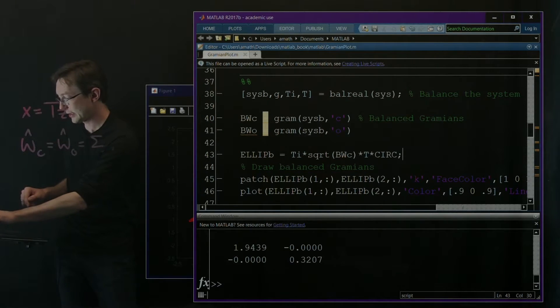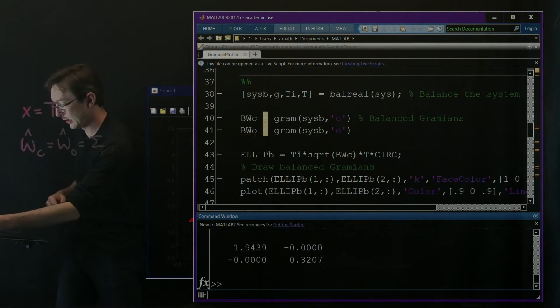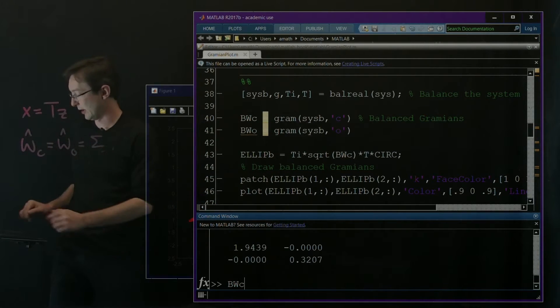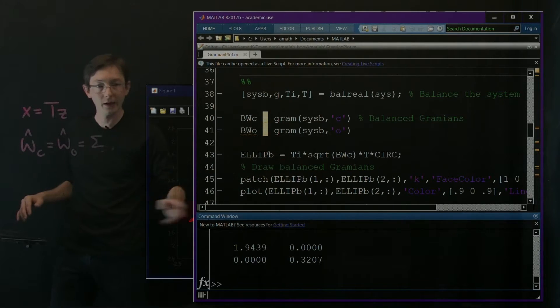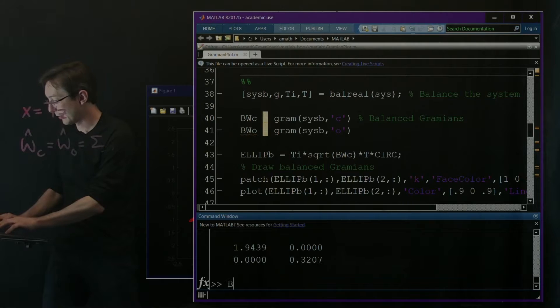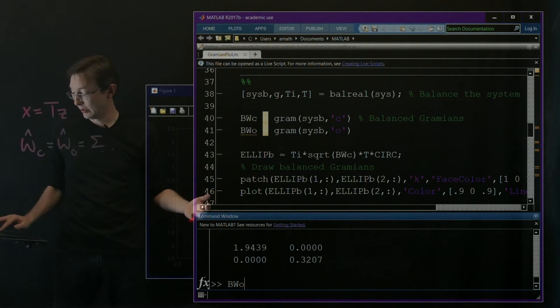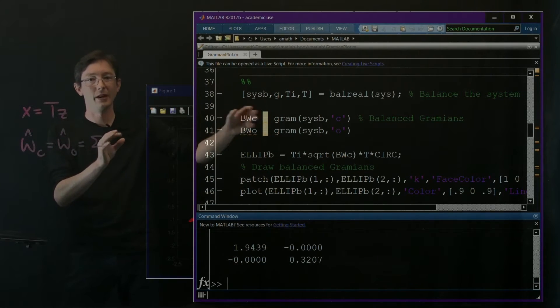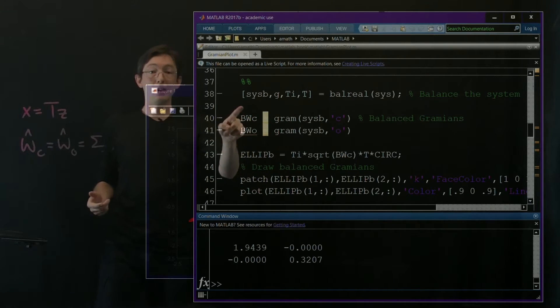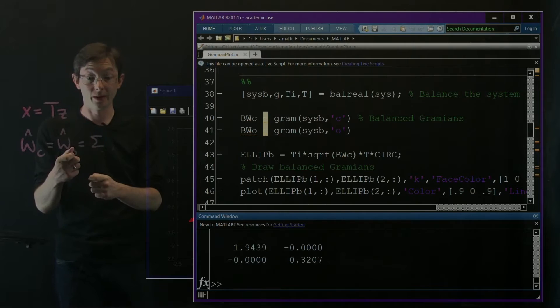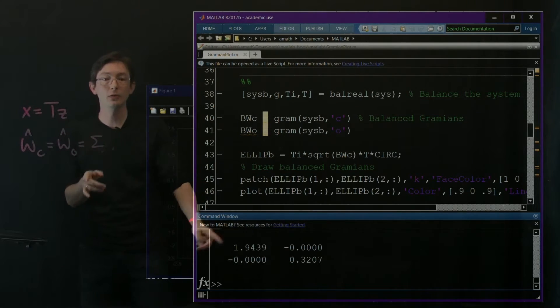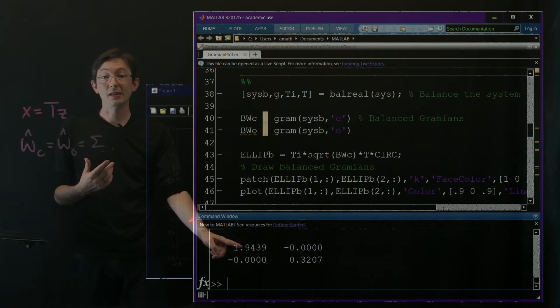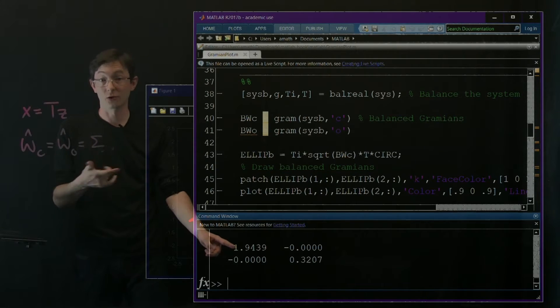And a couple things. First of all, in my command window, I plotted the controllability, the BWC. This is my balanced controllability Gramian. 1.9439 and 0.32. So it's diagonal. And now I'm going to plot my balanced observability Gramian. And it's the same. It's exactly the same. These little minuses popped up because those are zero plus or minus something really, really small. But basically, my balanced controllability and observability Gramians are equal and diagonal. And what's really cool, notice that this first diagonal entry is a lot bigger than my second diagonal entry. That means this one's a lot more important for controllability and observability.